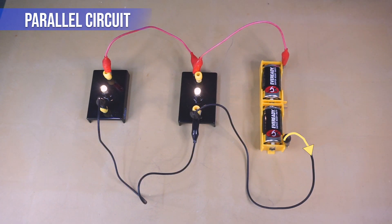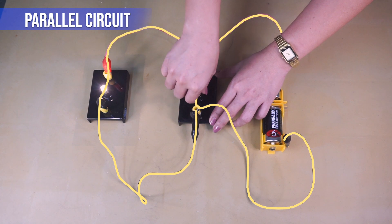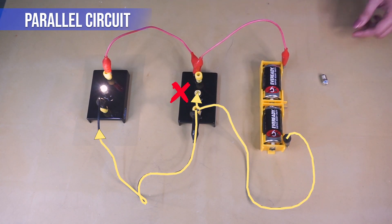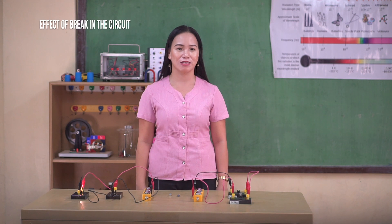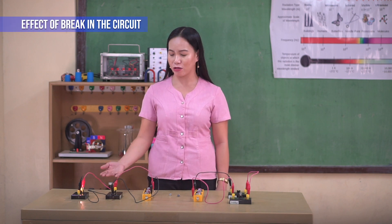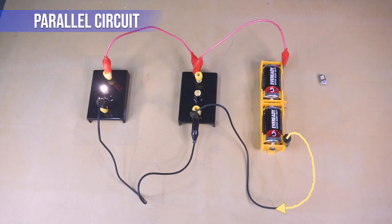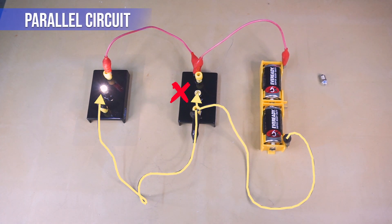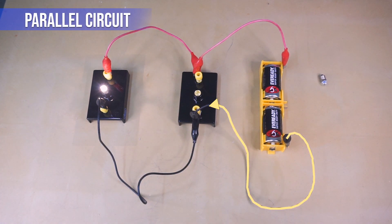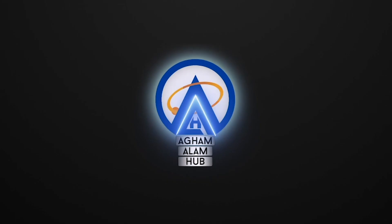On the other hand, unscrewing one bulb in the parallel circuit has no effect on the other bulb. Since only the path of the unscrewed bulb has a gap, the other bulb remains lighted because its path is complete and current can still pass through it.